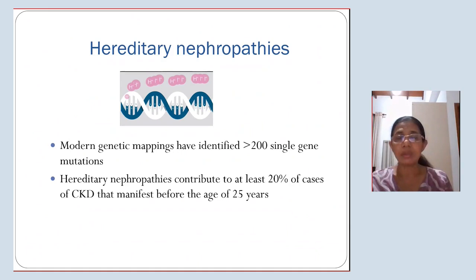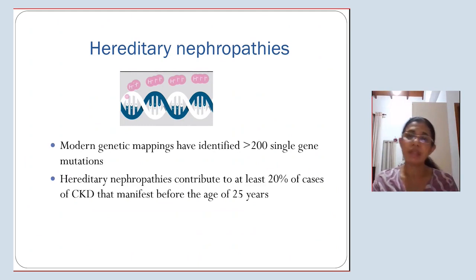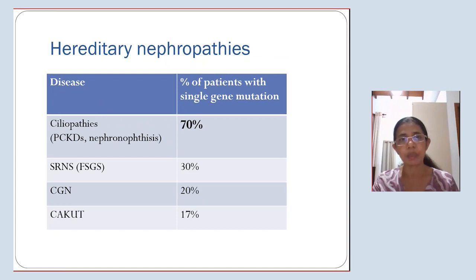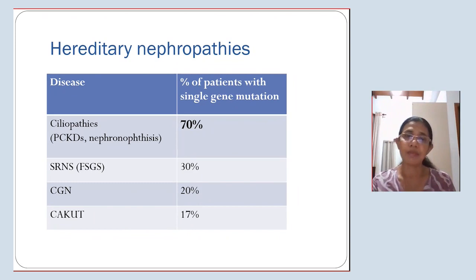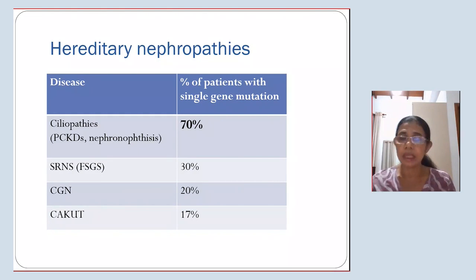With advances in genetic technology, the distribution patterns of the etiology of CKD have changed. Modern genetic mapping has identified more than 200 single gene mutations. Hereditary nephropathies contribute to at least 20% of cases of CKD that manifest before the age of 25 years. 70% of cystinopathies are due to single gene mutations — mainly autosomal recessive polycystic kidney disease (ARPCKD) and juvenile nephronophthisis. 30% of steroid-resistant nephrotic syndrome, 20% of other chronic glomerulonephropathies, and 17% of CKD have been shown to be due to single gene mutations, with more identified every year.